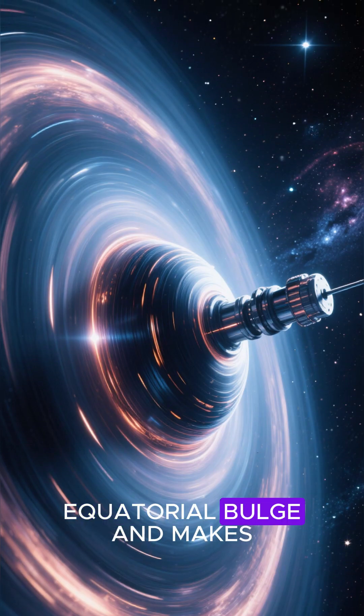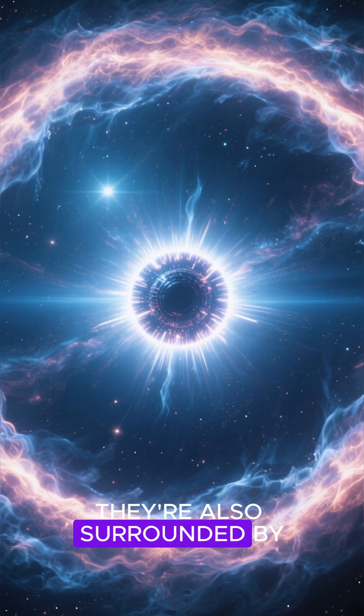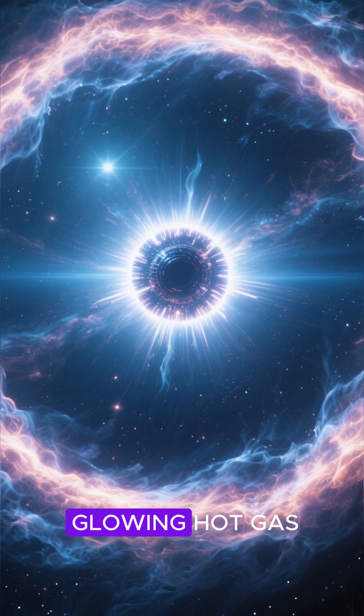This gives them an equatorial bulge and makes them spin like a top at hundreds of revolutions per second. They're also surrounded by a giant donut of glowing hot gas.